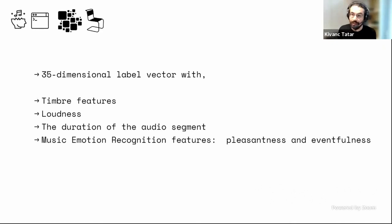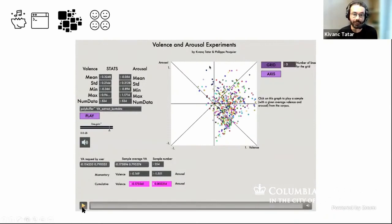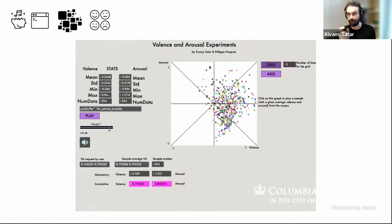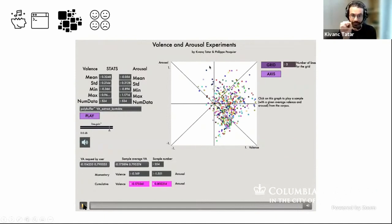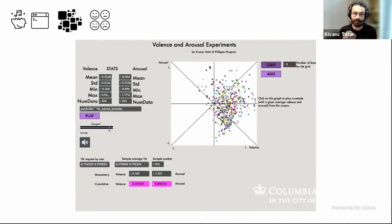I came up with a feature set of timbre features, plus loudness, plus the duration of the audio segment, and music emotion recognition features, which are pleasantness and eventfulness. Affective computing is not that well-known in arts and music, so here's an example using segments from Stockhausen's composition Kontakte. Each dot is a segment. The y-axis is arousal — whether a sound is calm or quite eventful. The x-axis is valence — whether a sound is darker or more bright and pleasant.